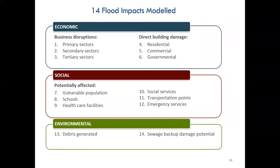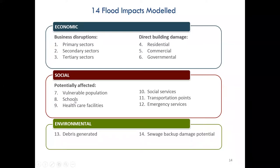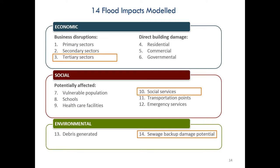We looked at 14 different types of impacts at the City of Vancouver, broadly falling into economic, social, and environmental categories. For economic impact, we looked at business disruptions in different major sectors and direct building damage in different major building types. For social impact, we looked at how social service facilities could be affected by inundation or prolonged power outage, including where vulnerable populations might be. For environmental impact, we looked at tons of debris generated and sewage backup damage potential. In the interest of time, I will go through three of the 14 impacts, one from each category.